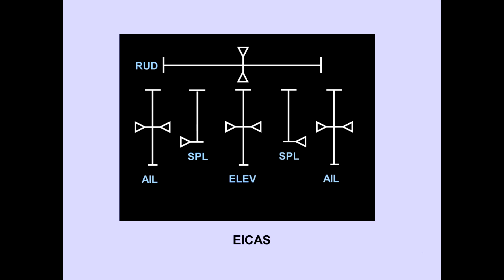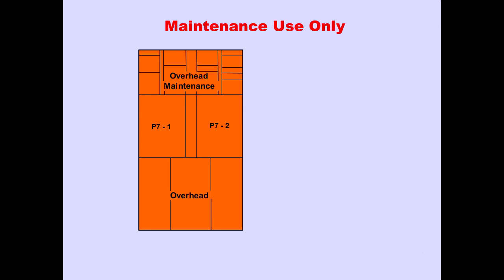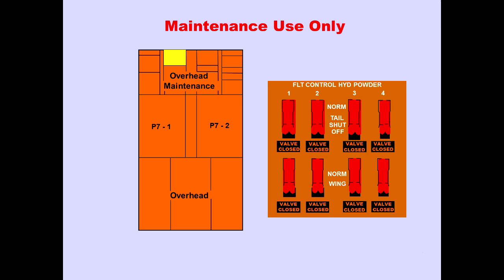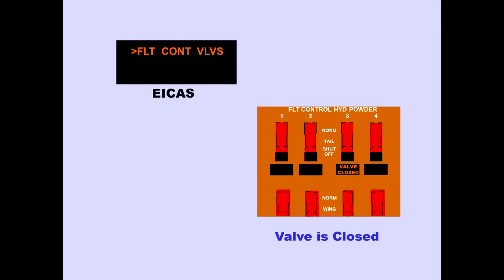All primary flight control positions are displayed on the ICAS status display. Full displacement of the control surface causes full deflection of the pointer. The flight control shutoff switches are located on the overhead maintenance panel. The switches control hydraulic shutoff valves to the flight controls and are for maintenance use only. The ICAS advisory message 'flight control valves' is displayed, and the respective valve closed light illuminates if any flight control shutoff valve is closed.